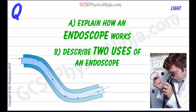Explain how an endoscope works and describe two uses for it. An endoscope is a medical instrument that is used to look inside the body directly through the natural openings in the body, for example down the mouth, or through a small incision.